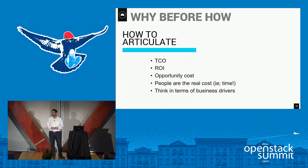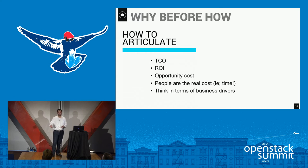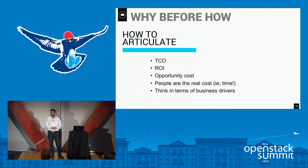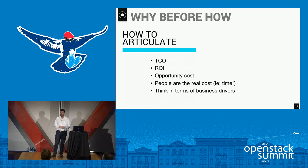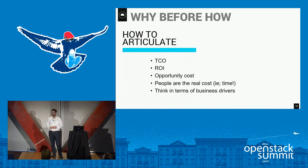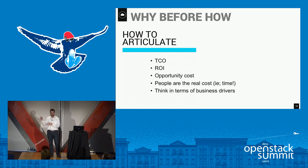Opportunity cost is basically the time it takes to go take advantage of a new opportunity. If you have inherently inflexible, rigid infrastructure, you're going to miss opportunities you might otherwise capture if you're quick and nimble. And people — people are expensive. A lot of IT budgets show people as the number one expense. People translate to time and therefore money. So if you're able to save time and be more efficient, you're going to deliver value to the business. We have to think in terms of the underlying business drivers and reasons we're looking at OpenStack in the first place.